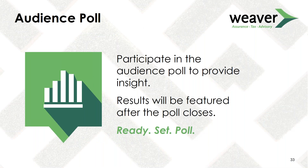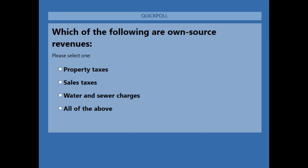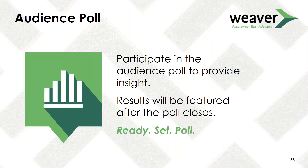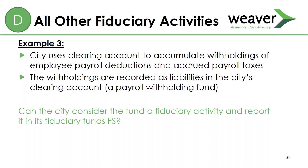Own source revenues are revenues generated by the government itself. GASB gives examples including exchange and exchange-like revenues such as water and sewer charges and investment income, derived tax revenues such as sales taxes and income taxes, imposed non-exchange revenues such as property taxes, and fines and forfeiture fees. Poll question: Which of the following are own source resources? A, property taxes. B, sales taxes. C, water and sewer charges. Or D, all of the above. 81% correctly answered D — all of the above. Own source revenues will preclude you from reporting an activity as fiduciary.